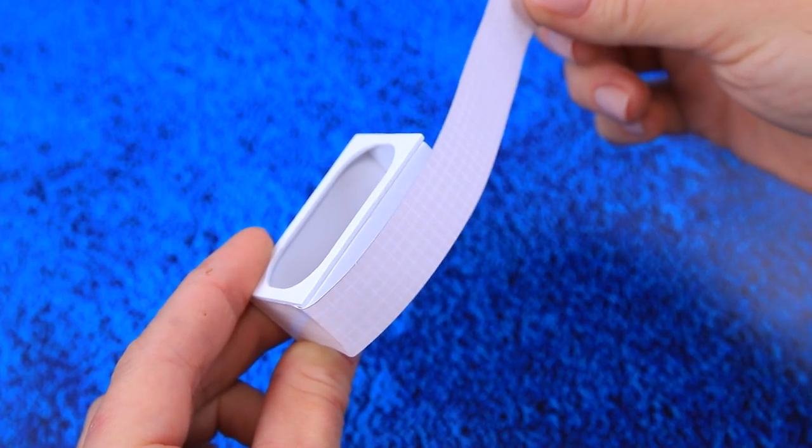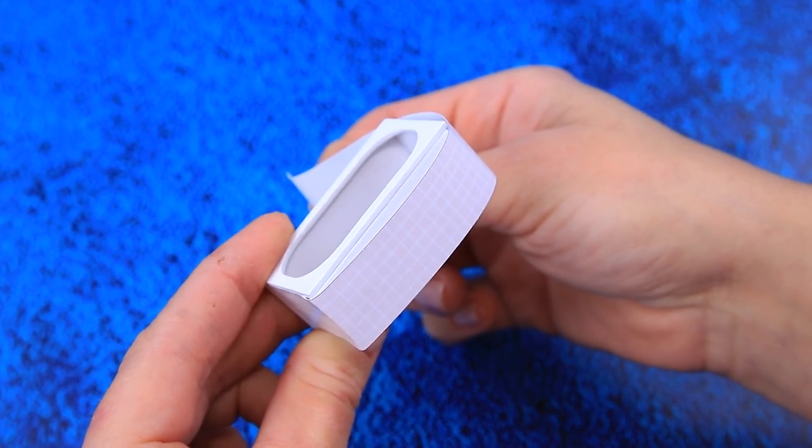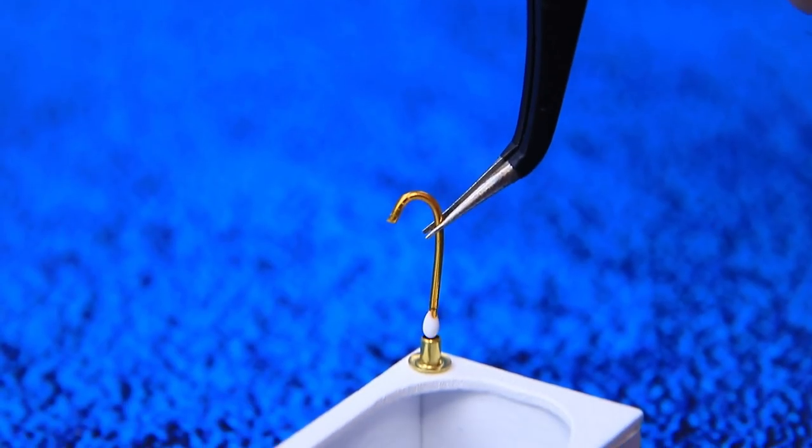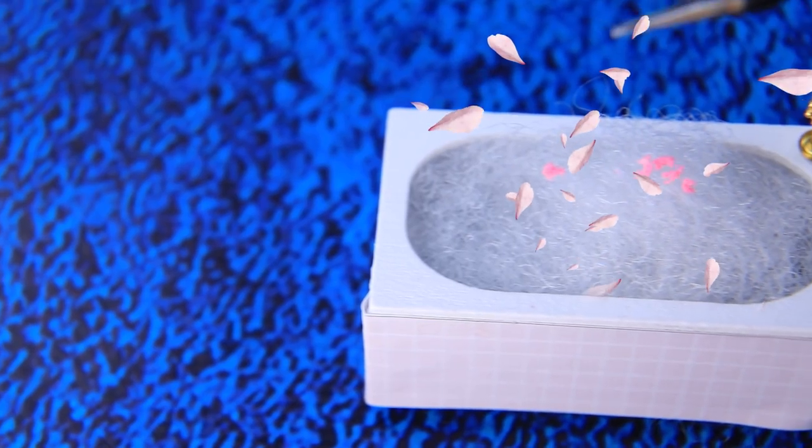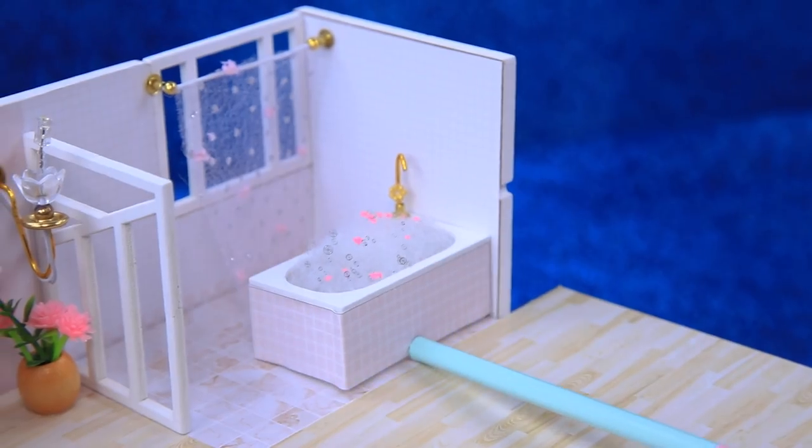Cover the bathtub with bricks on the side. Install a tiny faucet. The bathtub is filled with flower petals. It looks so relaxing.